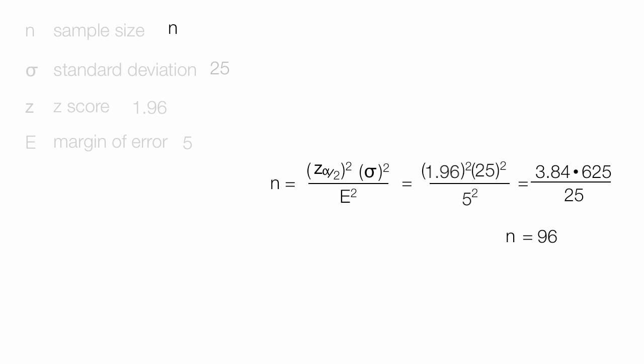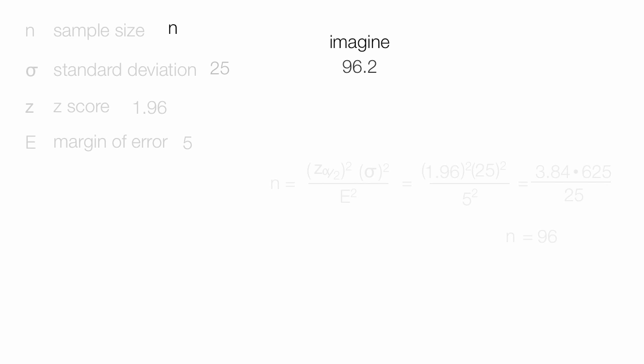Now imagine if the sample size that I calculated was 96.2. I would round up to 97, so when you do sample sizes, always round up. In this case, there's no such thing as a .2 person, so you round up to the next person, which would make it 97.